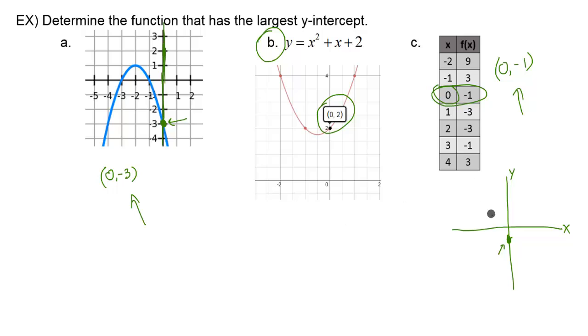Now, before I move on, I want to go back to B right here. Besides just graphing this and looking at the y-intercept on the graph, and besides looking at the table, you could also figure it out by just using the equation.